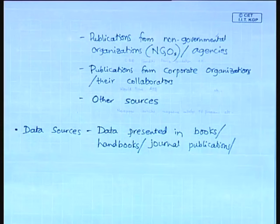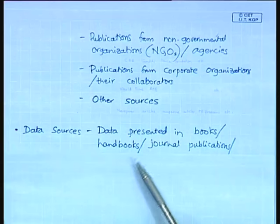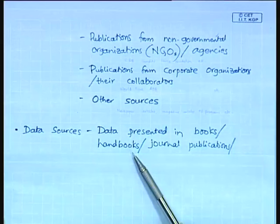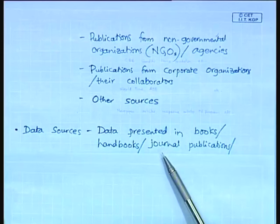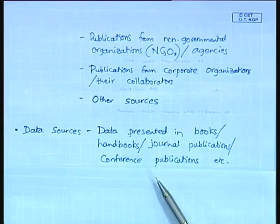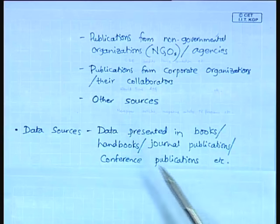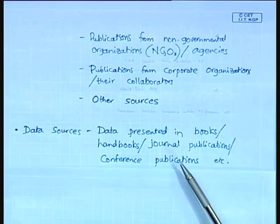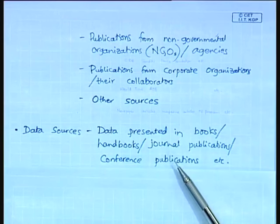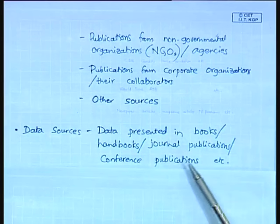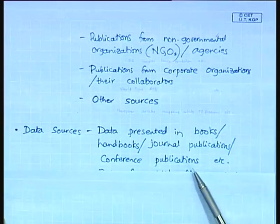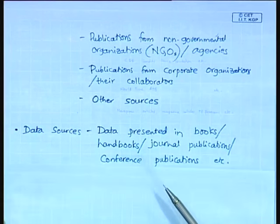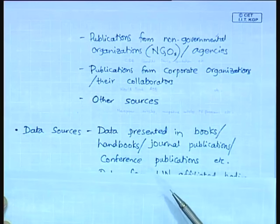The data presented in books, in handbooks published on groundwater or hydrology, as well as the data presented in journals are major sources. We should remember that data does not essentially mean numerical data — it may also include data presented in the form of graphs, charts, or maps, in addition to statistical or numerical data, as well as data published in conference proceedings, symposia, or seminars. These constitute the major sources of data available on ground water.